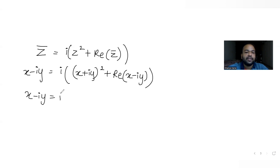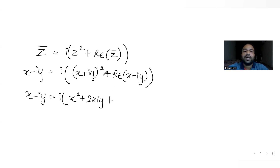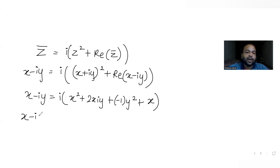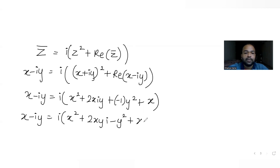Expanding, x minus i·y equals i times (x² plus 2·x·i·y plus i²·y²) plus x. Since i² equals minus one, the term i²·y² becomes minus y². So x minus i·y equals i times (x² plus 2xy·i minus y²) plus x.